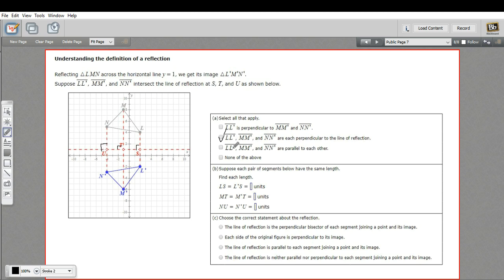Then it says those same segments are parallel to each other. Well, if they're all perpendicular to that line, they're definitely all parallel to each other. And I think that's all that applies here. Let's look at B.